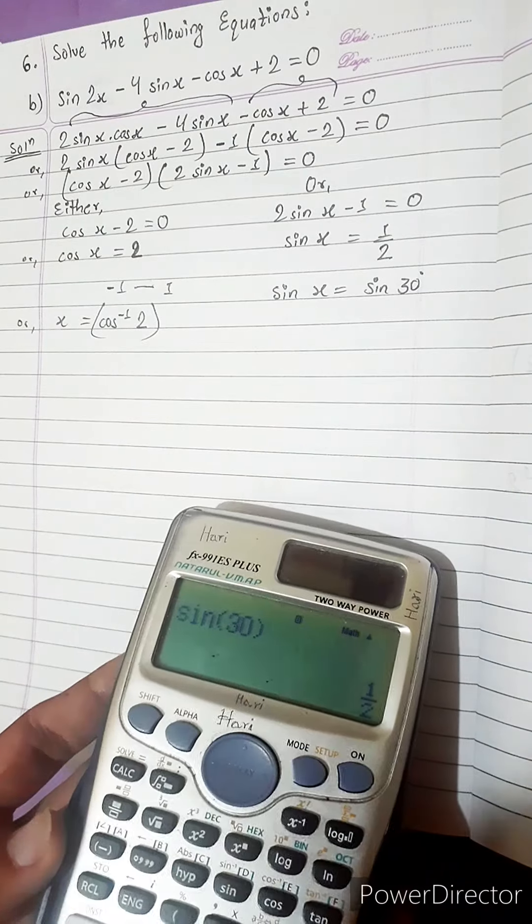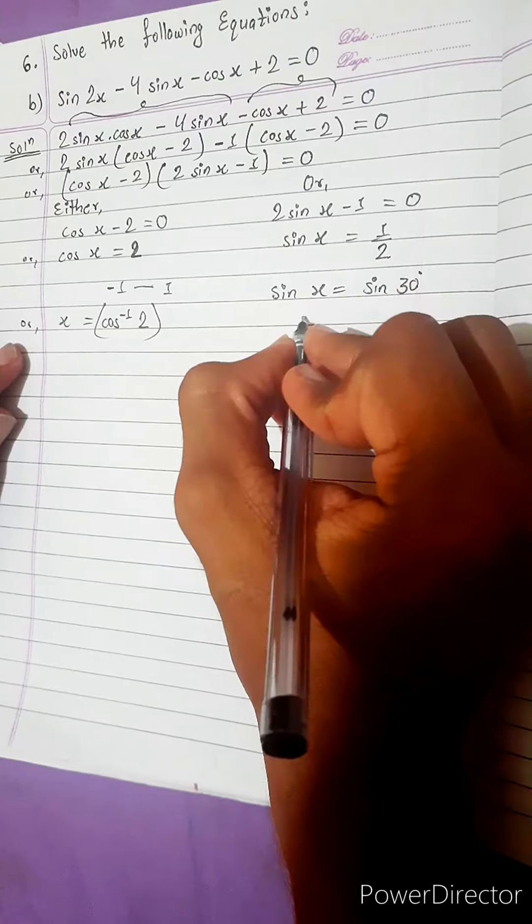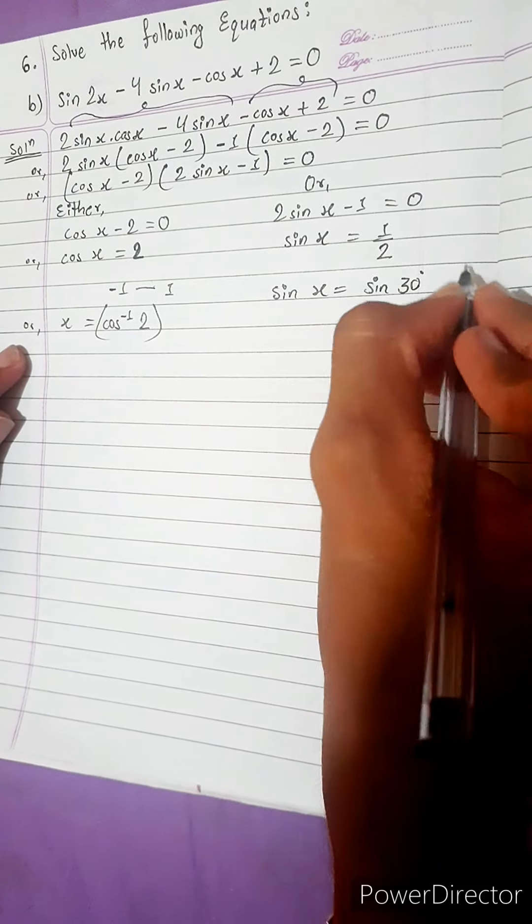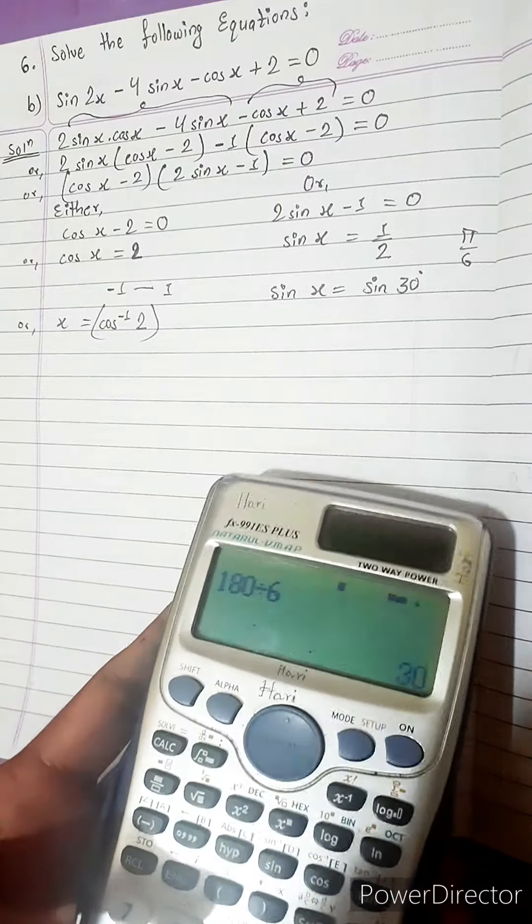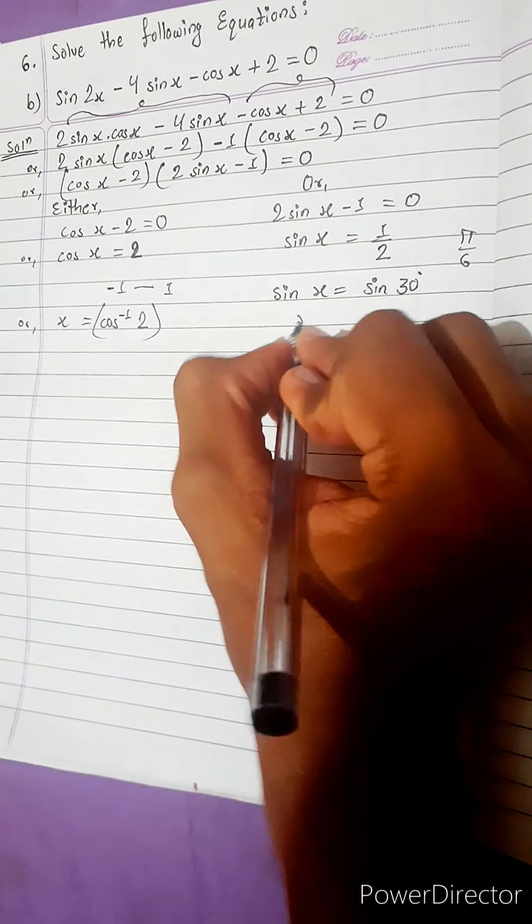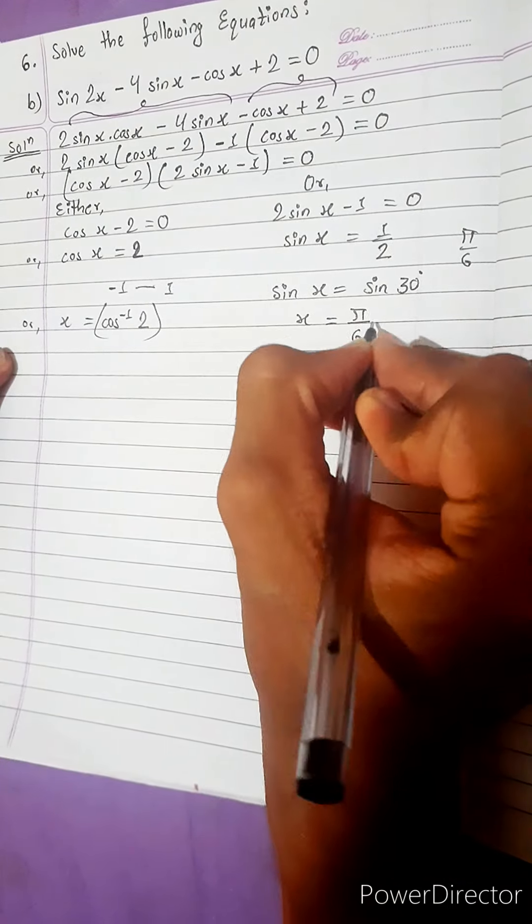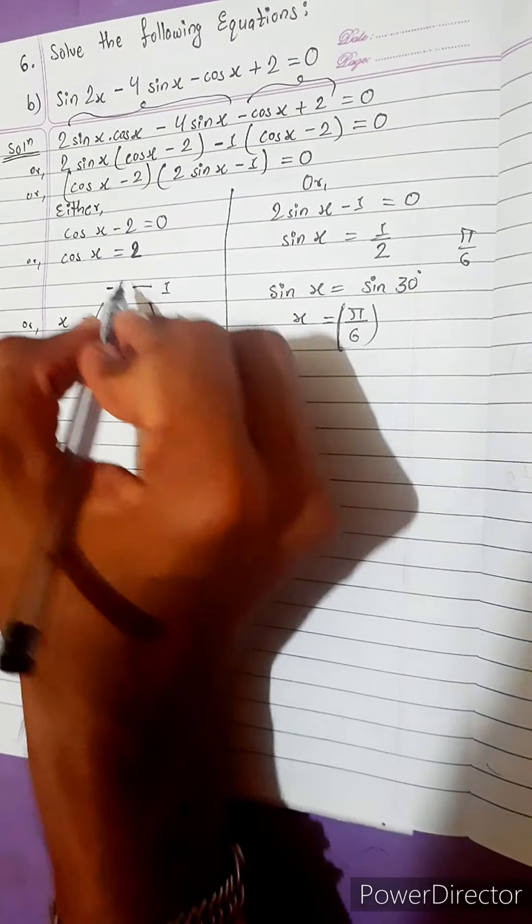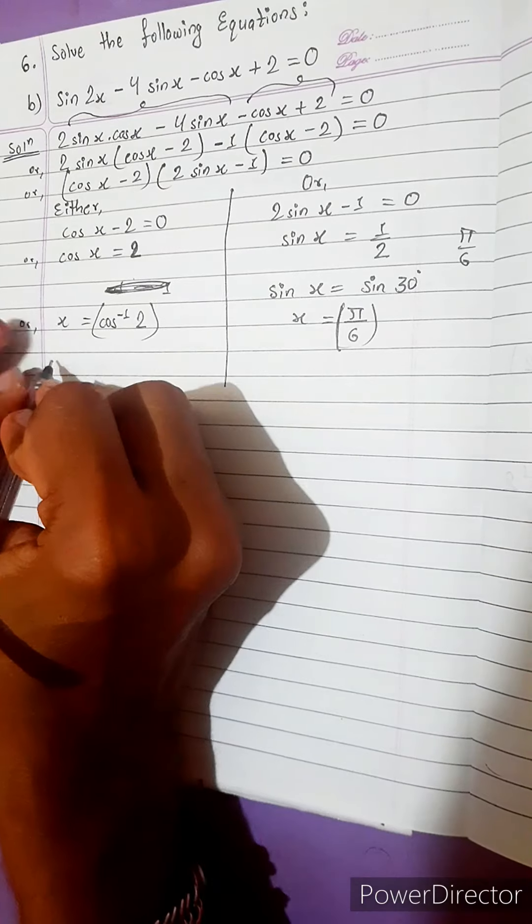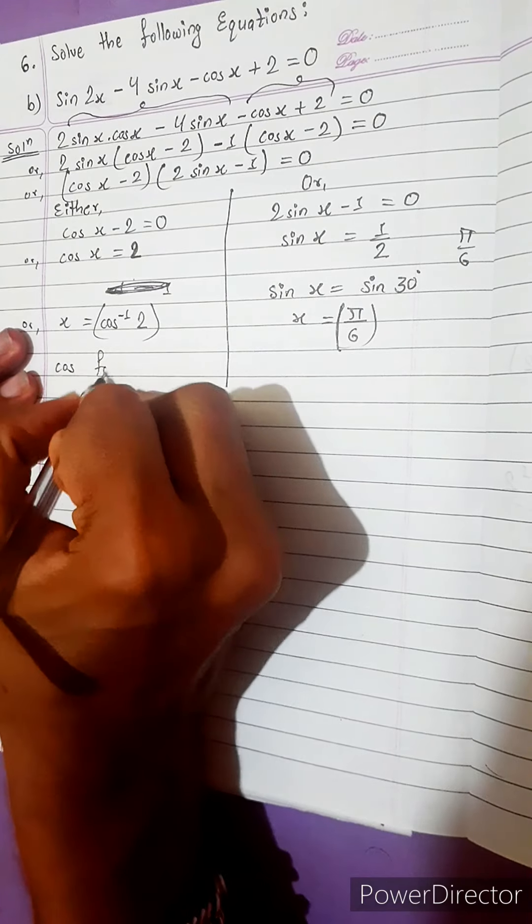Sin x equals to sin 30. I can show proof also. Sin 30 is 1 by 2. So, in place of 30 we will write here 180 by 6, pi by 6. 180 by 6 is 30. So x equals to pi by 6. We got the value of x in both the terms.